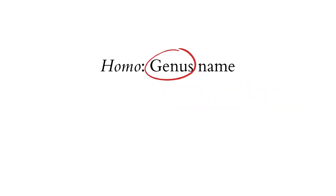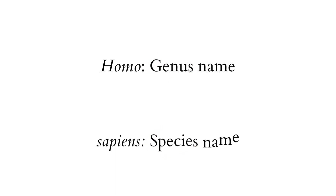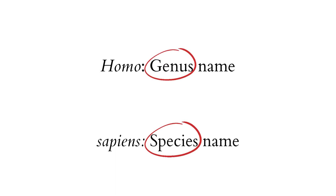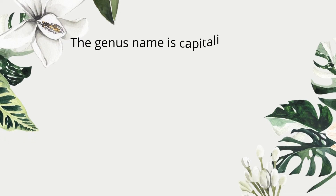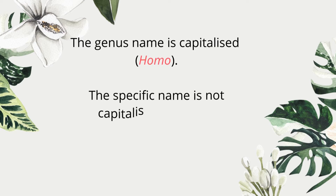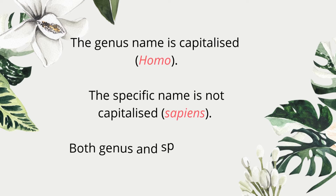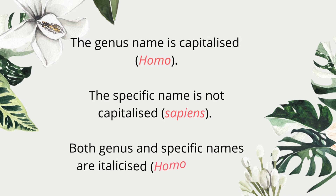Homo is the group, or the genus name to which we belong, and sapiens is our species name. There are certain rules of writing a species scientific name. The genus name is capitalized, and the specific name is not capitalized. Both genus and specific names are italicized.